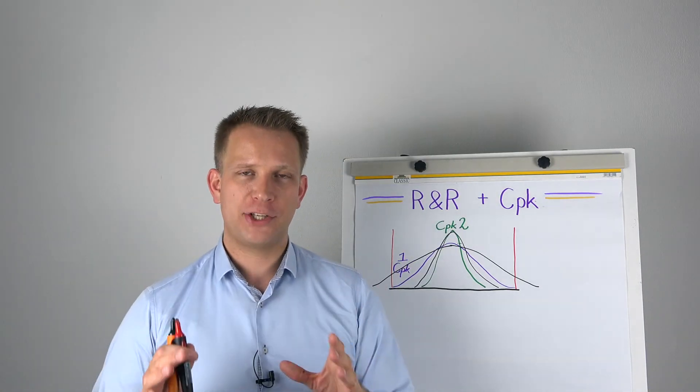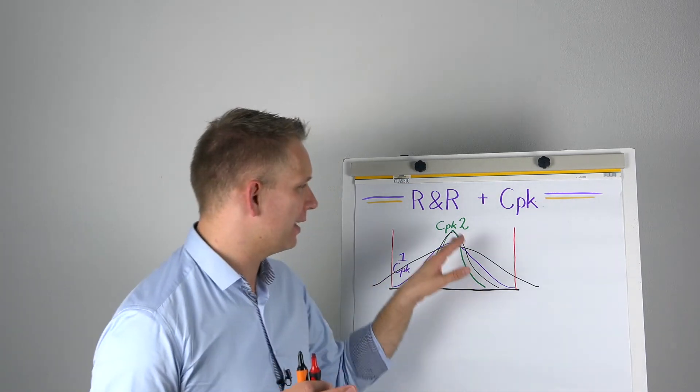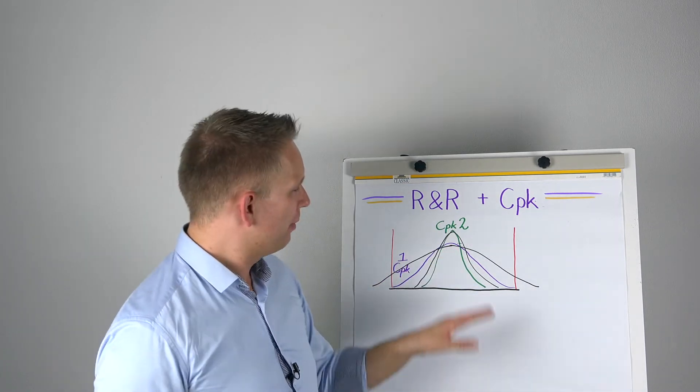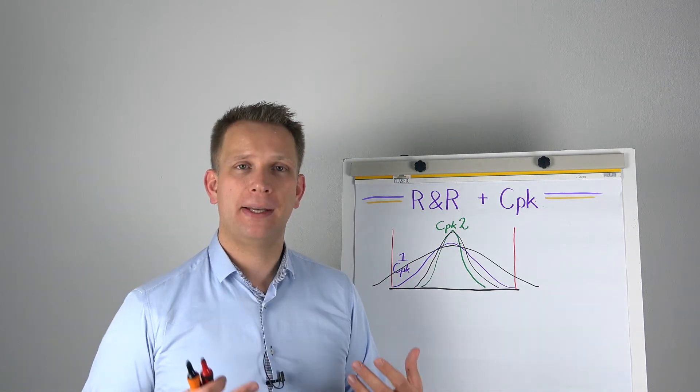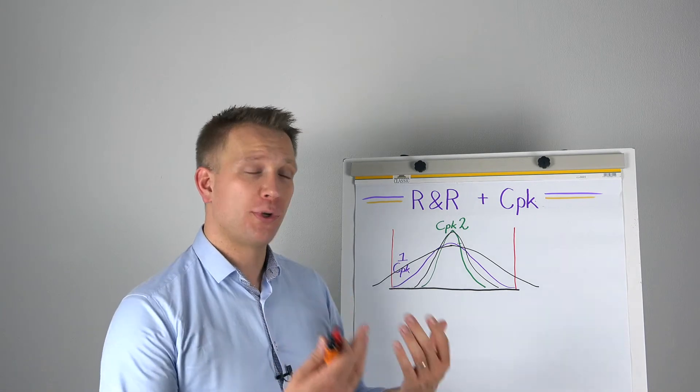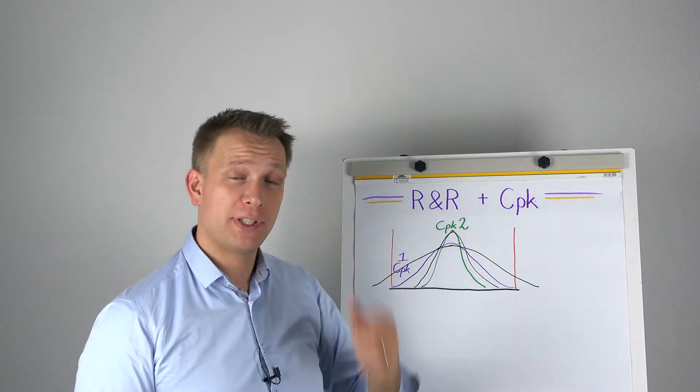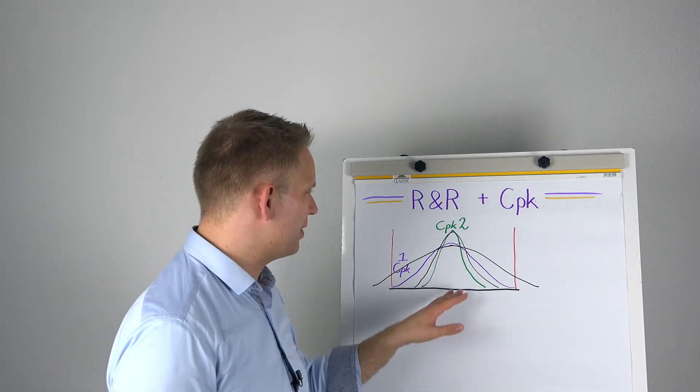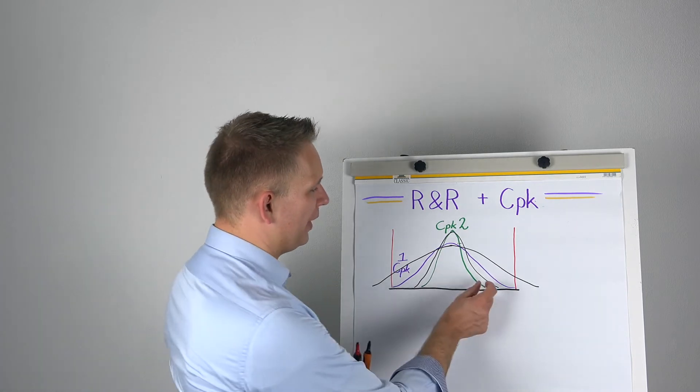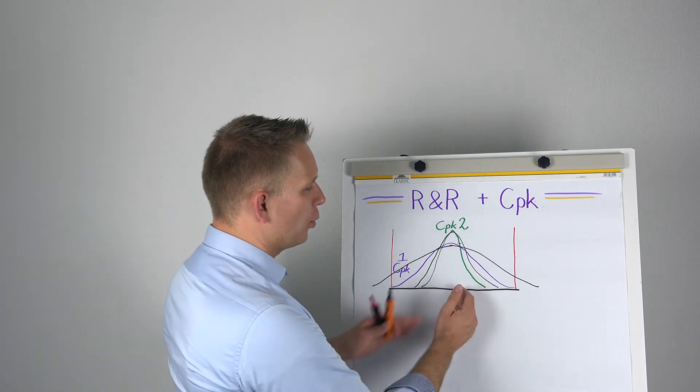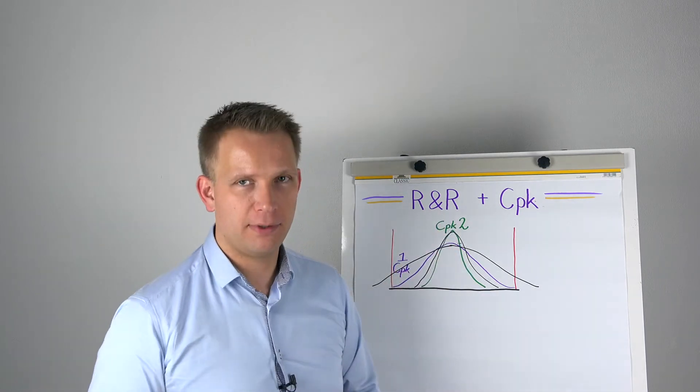If you have a measurement system that gives you, and let's take the CPK2 case here, but you've got a measurement system that gives you about 20 percent of the observed variation in your process comes from the measurement system. So you have an R&R of 20 percent, not super, also not really bad. In this example, a 20 percent gap here would be about 10 percent of tolerance limits, because of the whole CPK thing.